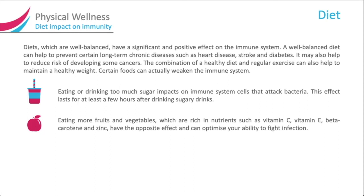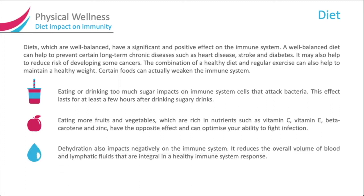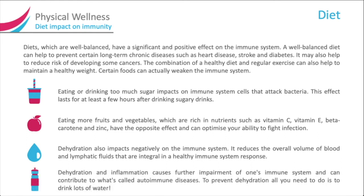Eating more fruits and vegetables which are rich in nutrients such as vitamin C, vitamin E, beta-carotene, and zinc have the opposite effect and can optimise your ability to fight infection. Dehydration also impacts negatively on the immune system. It reduces the overall volume of blood and lymphatic fluids that are integral in a healthy immune system response. Dehydration and inflammation can cause further impairment of the immune system and contribute to autoimmune diseases. To prevent dehydration, all you need to do is drink lots of water.